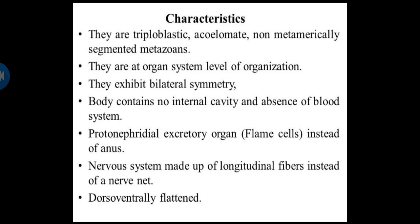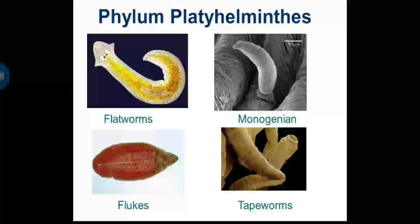Fertilization is internal and may be self or cross fertilization. Development is sometimes direct in some animals or indirect in others, which also have a complicated life cycle involving many larval stages and hosts. Examples of this phylum are Turbellaria, Monogenea, liver flukes, and tapeworms. All these animals are parasitic in nature and also develop as free-living forms.